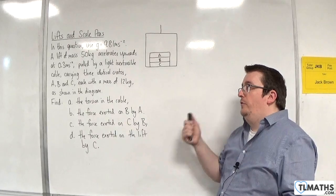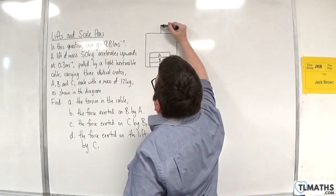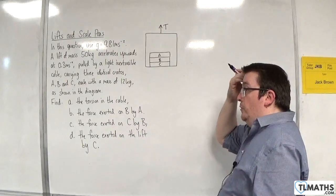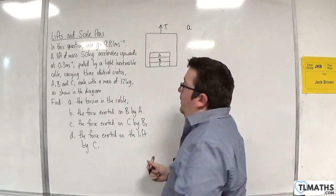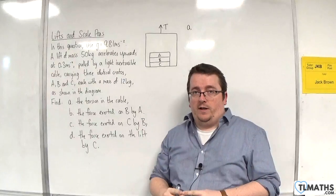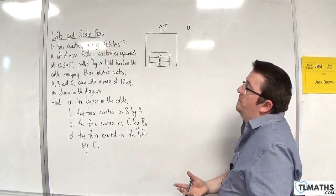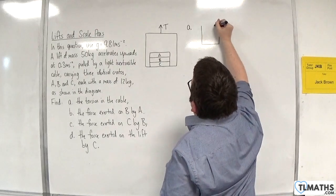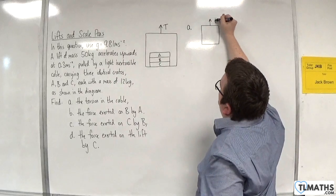So first of all, find the tension in the cable. There will be tension in that cable. What I'm going to do is, in order to look at part A where I'm just looking at the tension in the cable, I'm just going to treat it as one object. The lift and the three masses inside, think of it just as one big box. And there is tension in the cable.